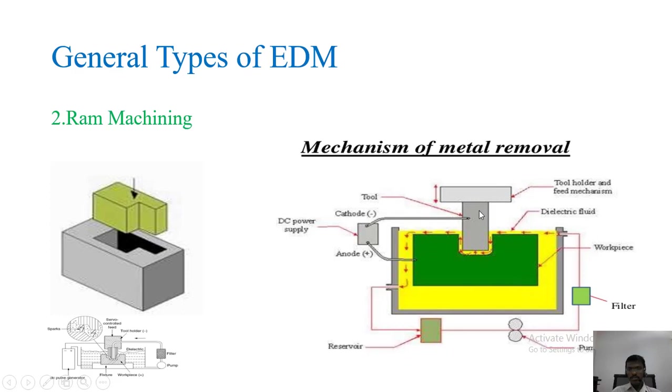This one is the workpiece. Negative power supply is given to the electrode and positive power supply is given to the workpiece. This one is the recycling unit for electrolyte. This one is the tool. It will move up and down. When we are giving the power supply to the electrode, both are energized and the metal will be melted here. This metal is removed by the electrolyte. This one is the reservoir. This one is the pump filter. And again it's recirculated. Like this way, the material is removed by this ram machining EDM.